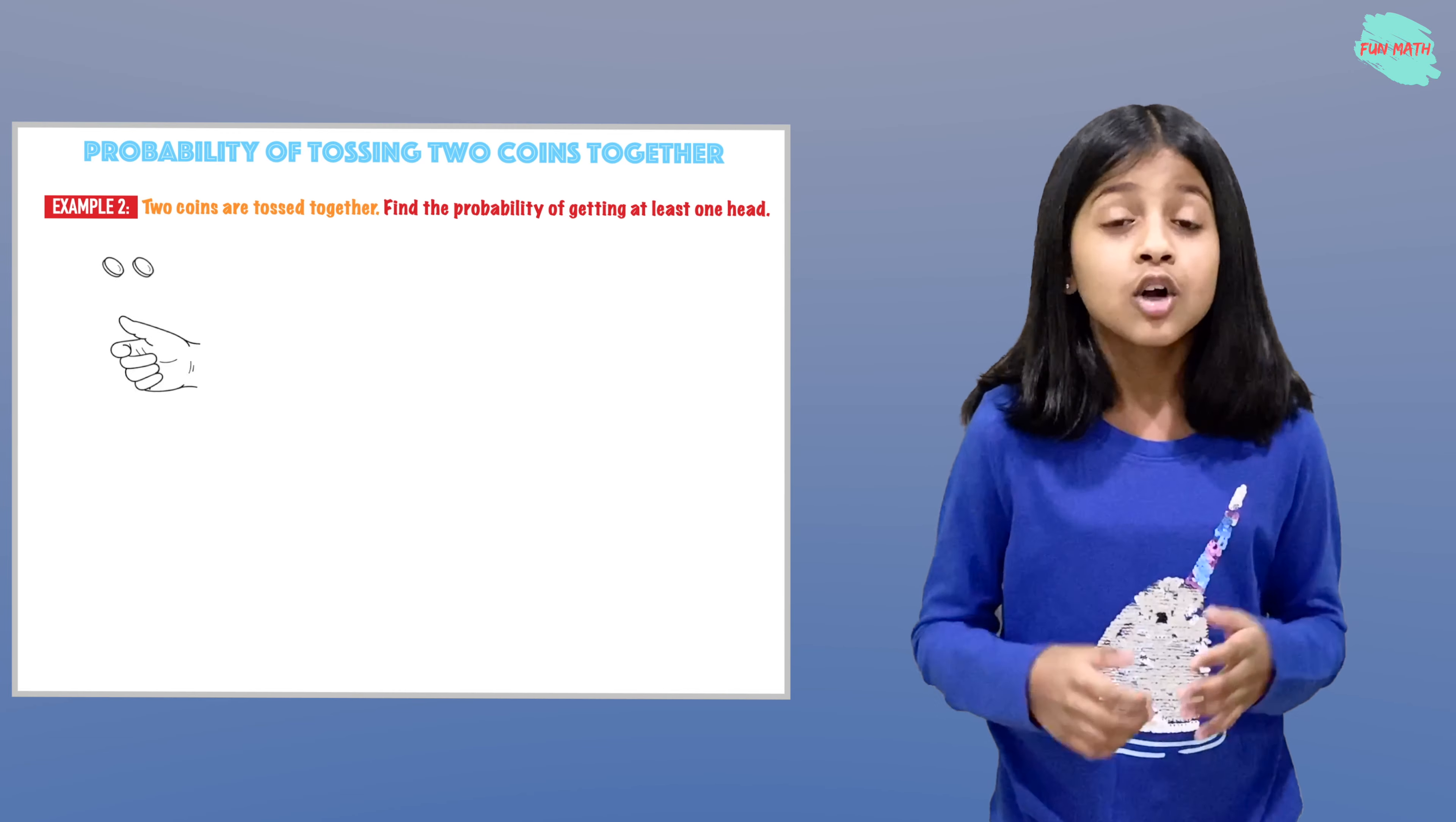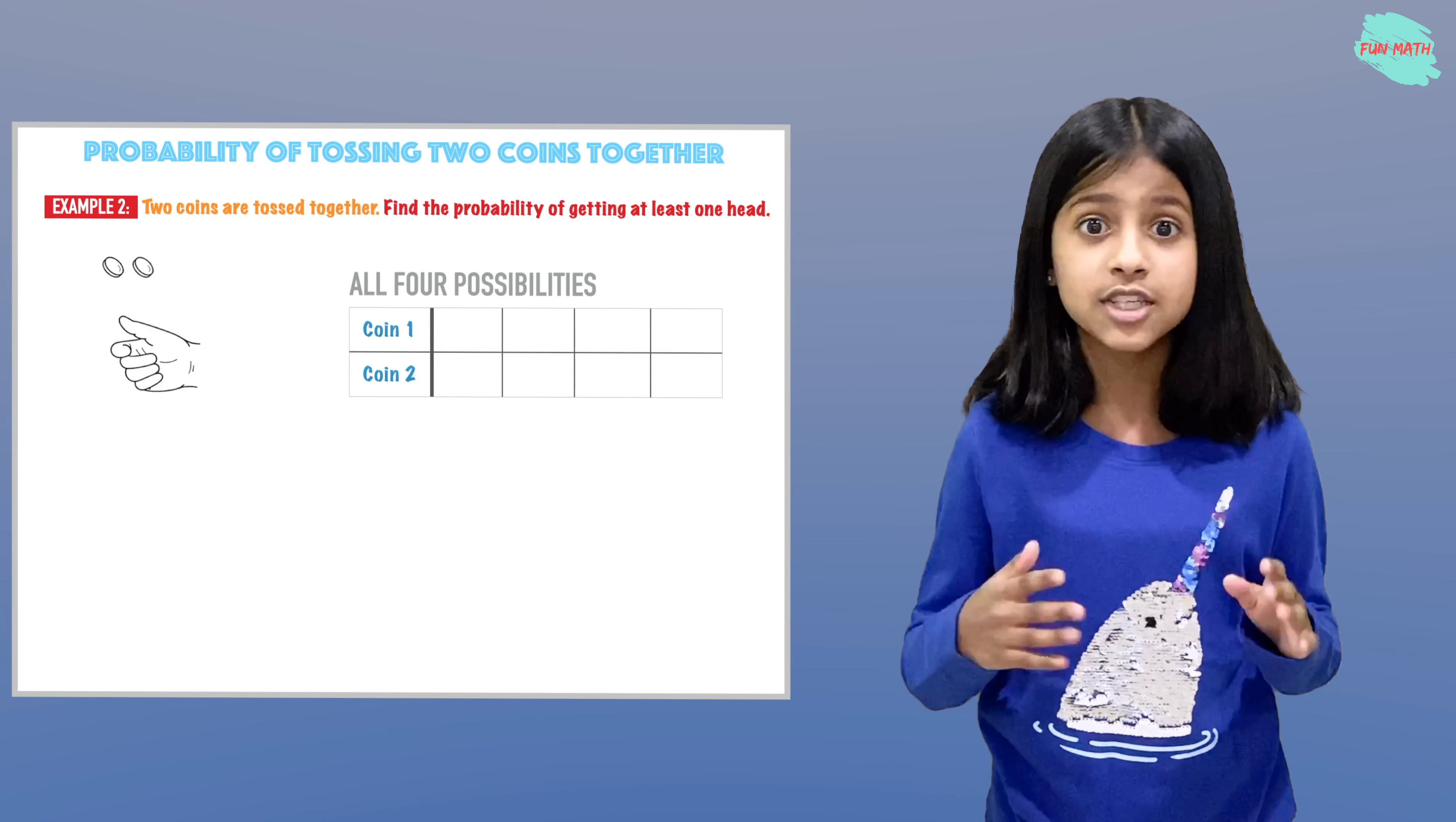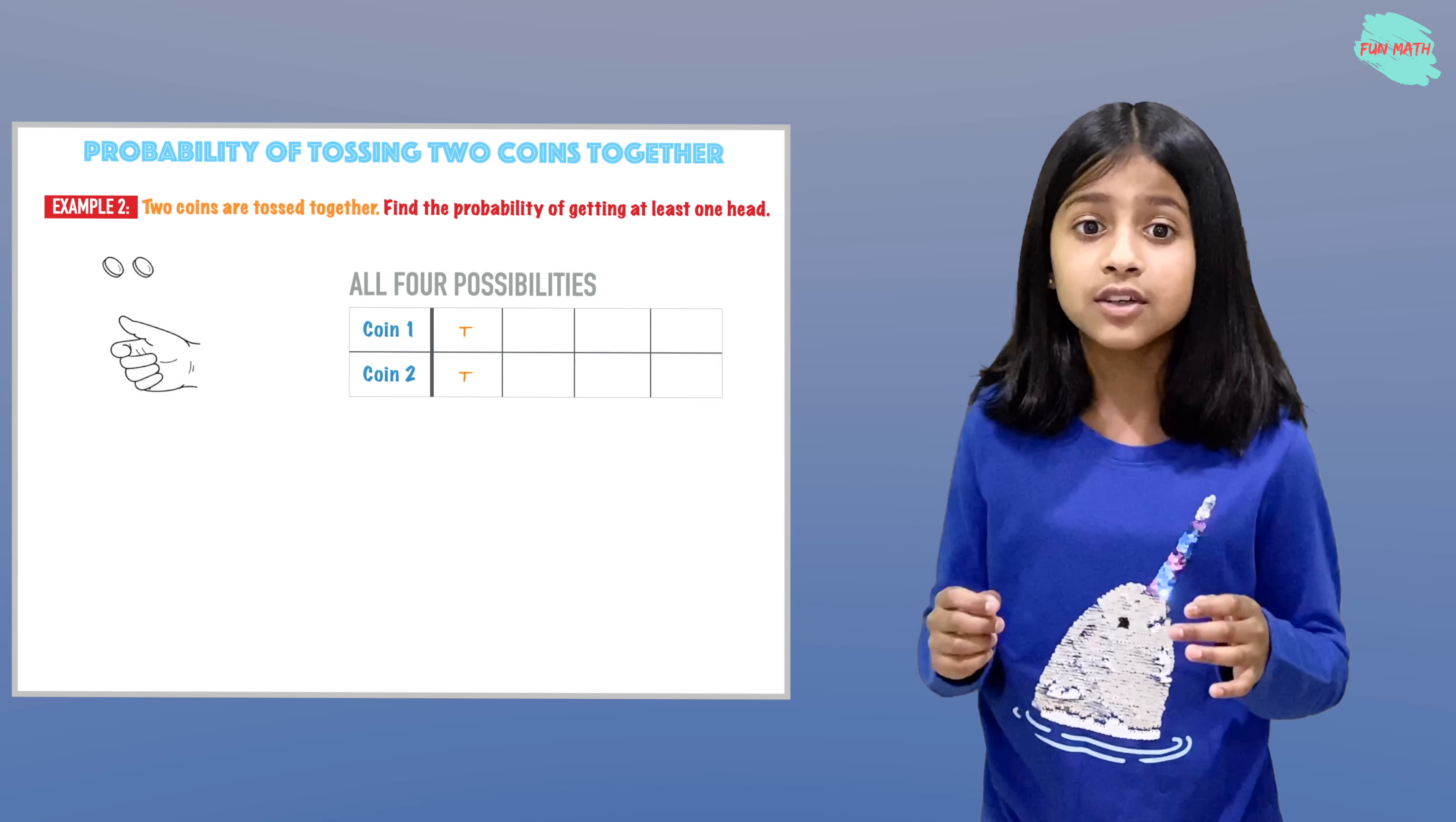Here we are tossing two coins together, and we have four possibilities. Let's talk about them. When we are tossing coin 1 and coin 2 together, the first possibility is we are getting tails for coin 1 and tails on coin 2.